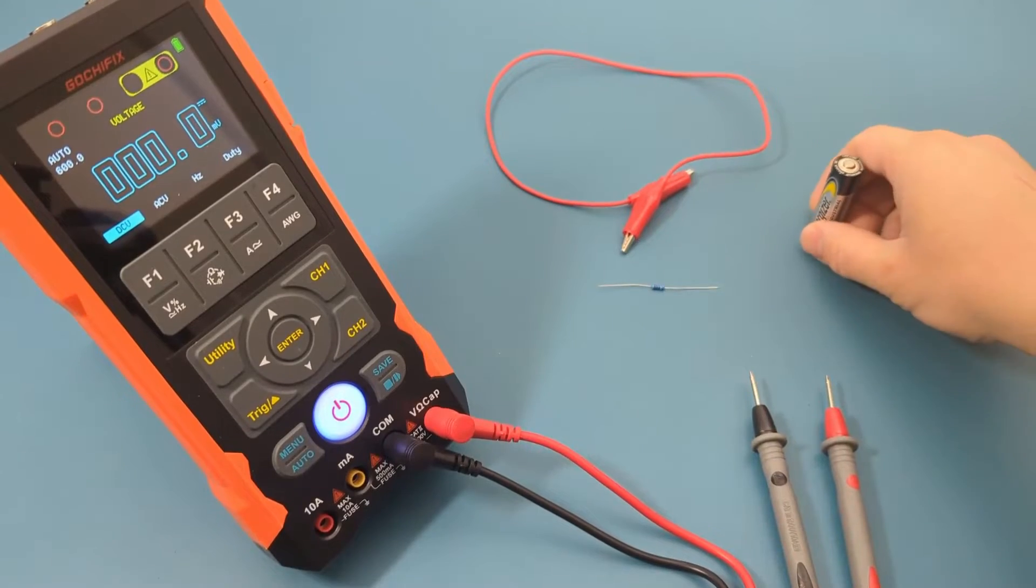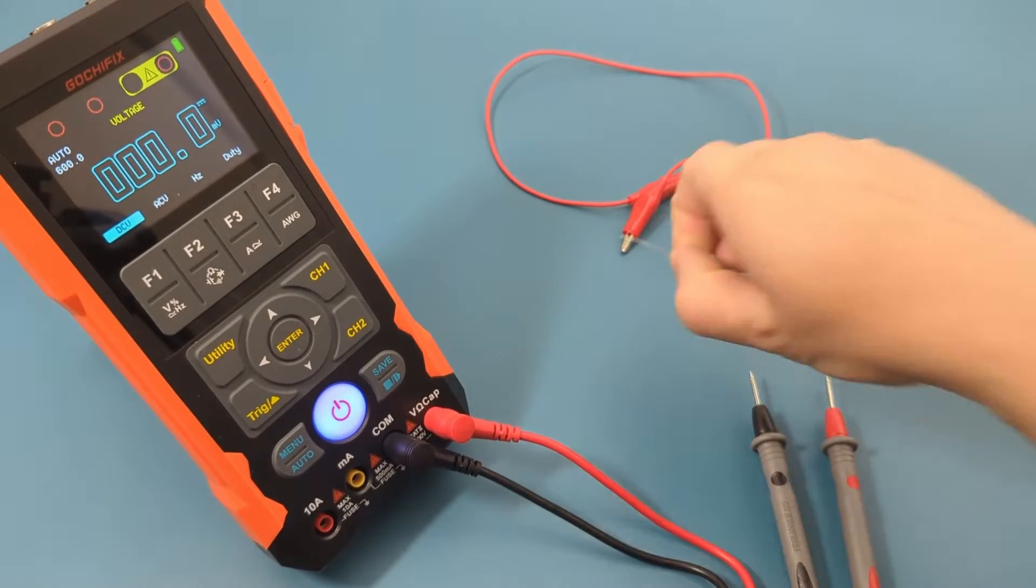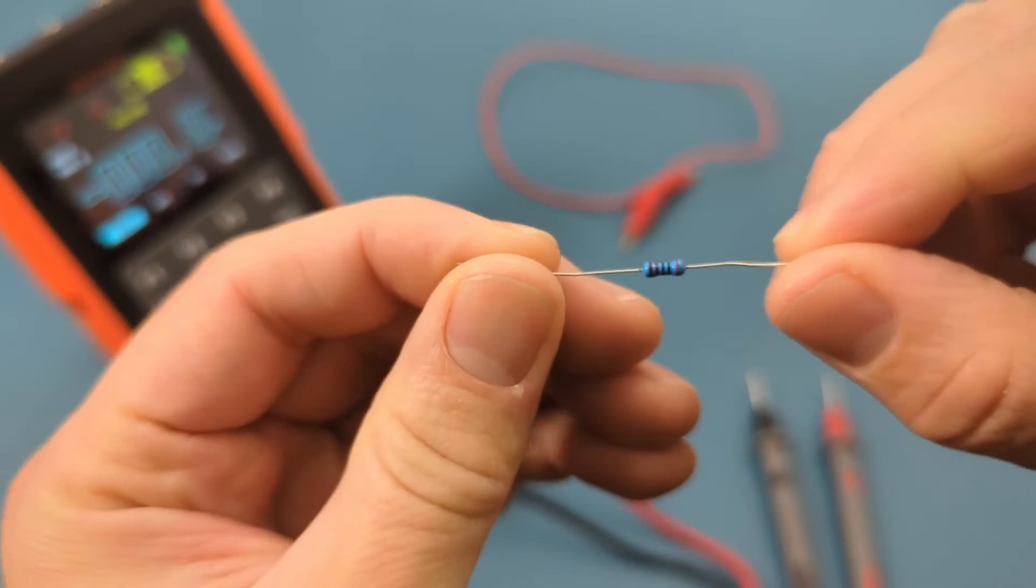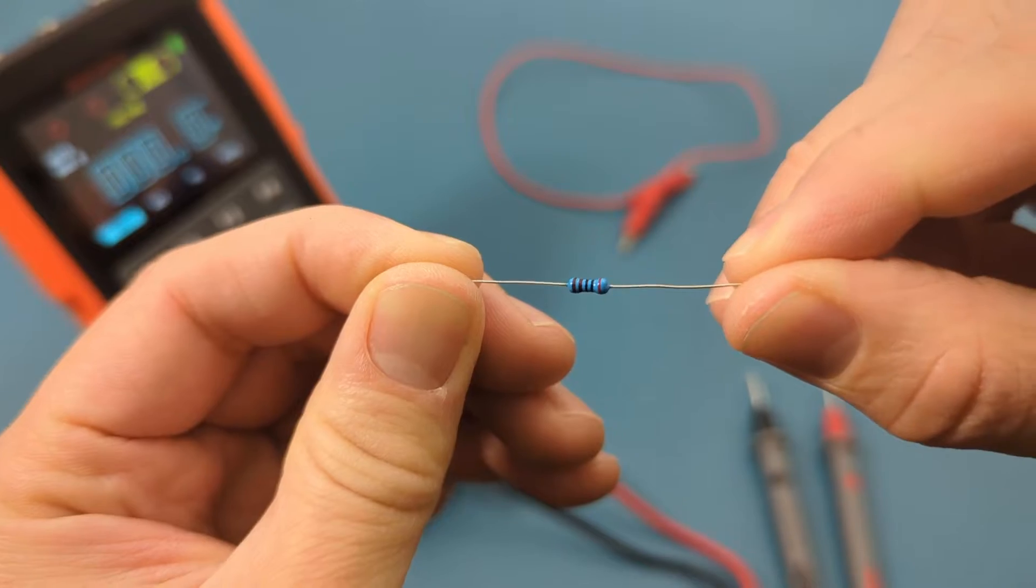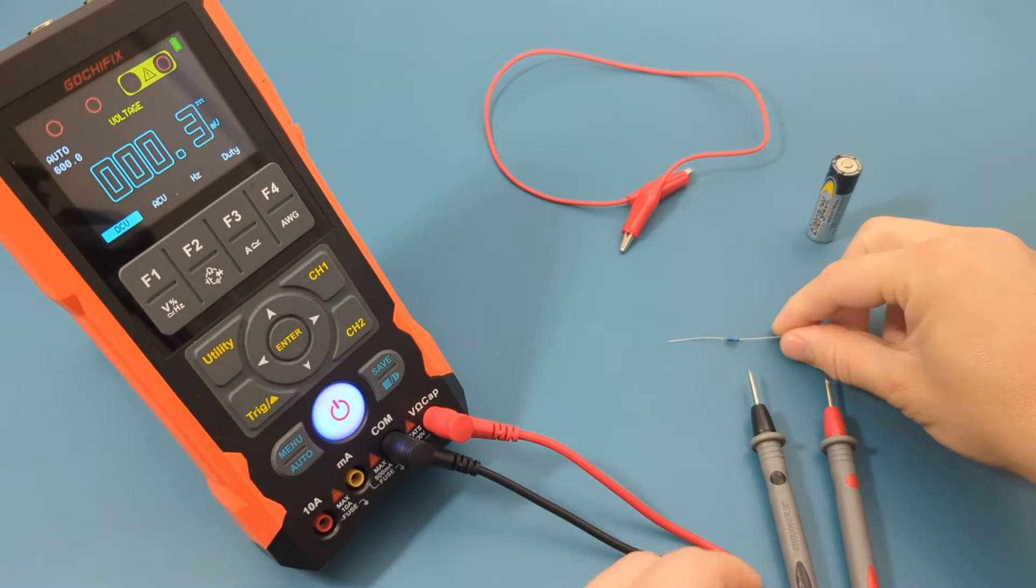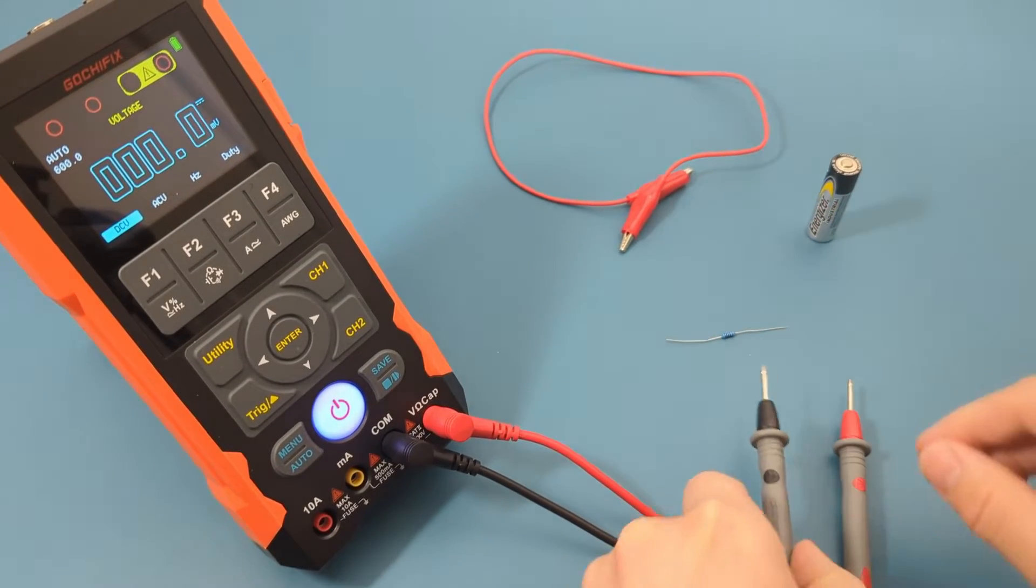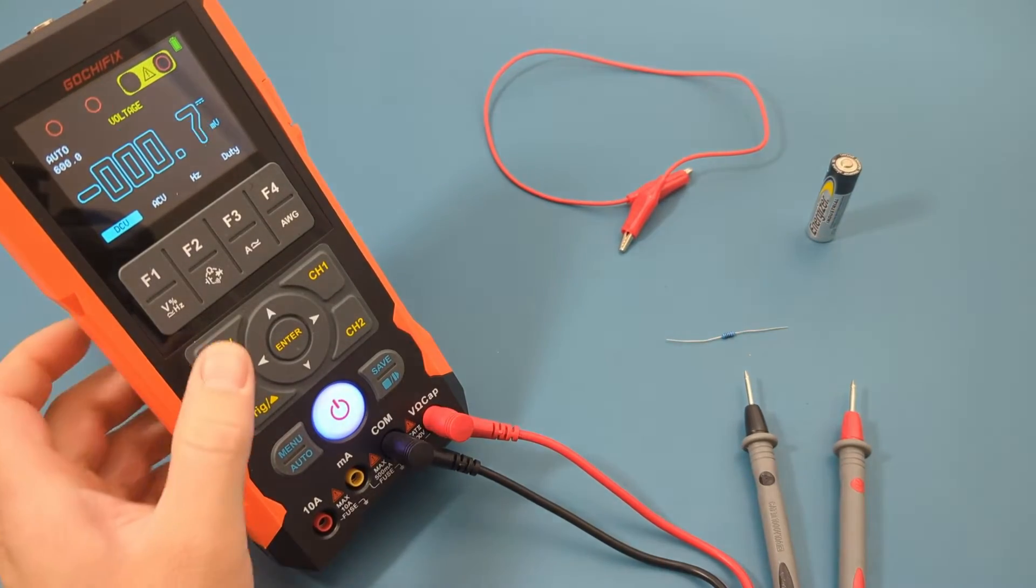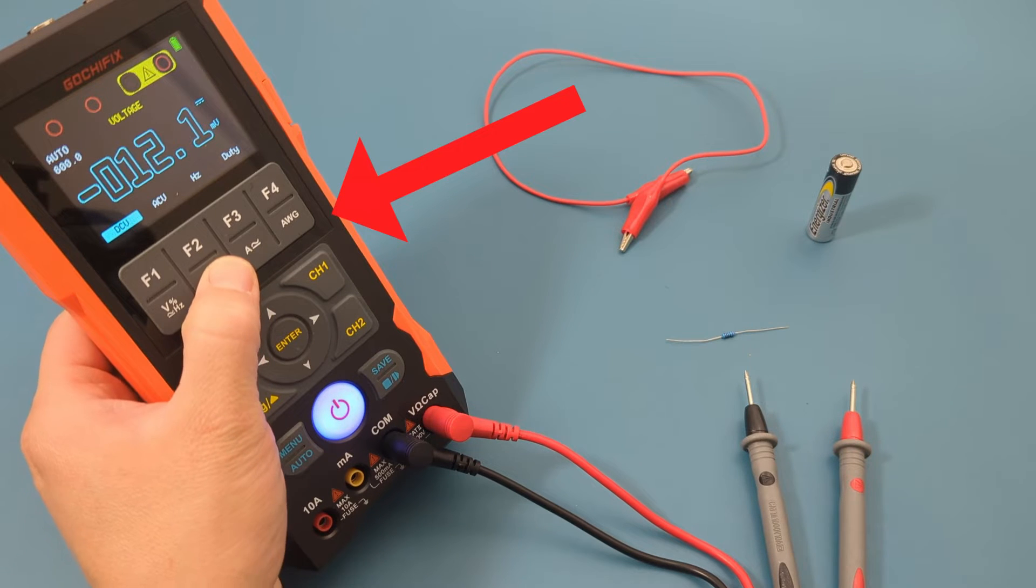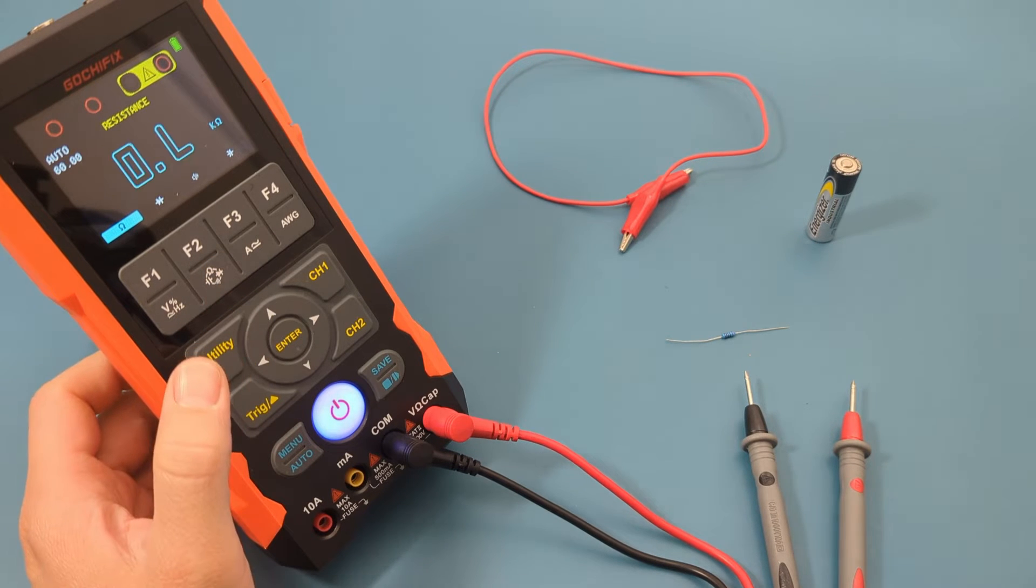The following test involves measuring the resistance of this resistor. This is a 2000 ohm resistor. On the multimeter, press the resistance diode button to switch to the resistance setting. It has the ohms symbol.